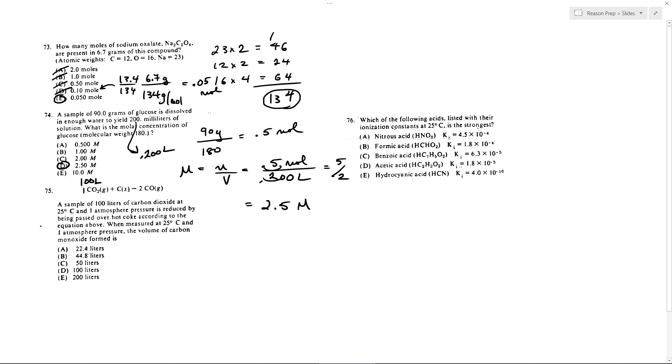And when you're dealing with gases, assuming a constant temperature and pressure as we are here, you can use that mole ratio as a kind of volume ratio. So this 100 liters will turn into 200 liters of your carbon monoxide from that 1 to 2 ratio. So for 75, we will get choice E.